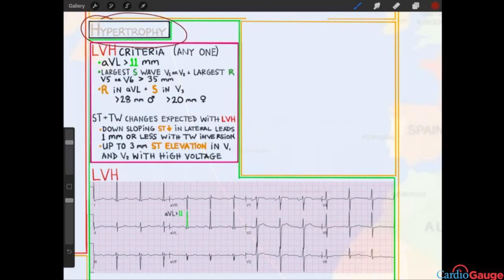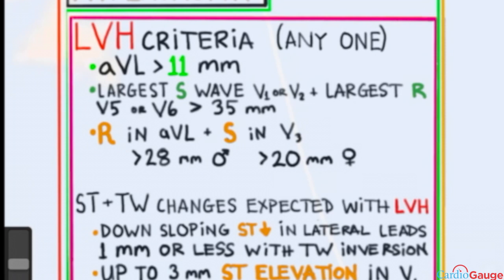Now we're going to do hypertrophy. We're going to start with left ventricular hypertrophy criteria — that's LVH. There are a bunch of different criteria. I basically just remembered two of them for EKG boards, and that was enough. I also included a third one because it's supposed to be the most accurate diagnostically for predicting the presence of LVH.